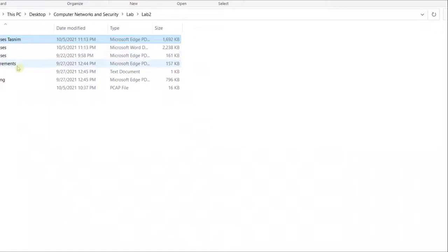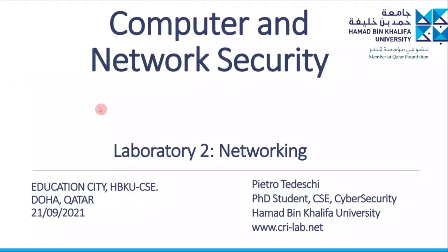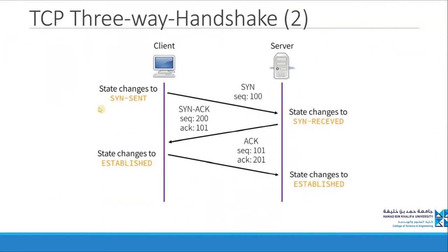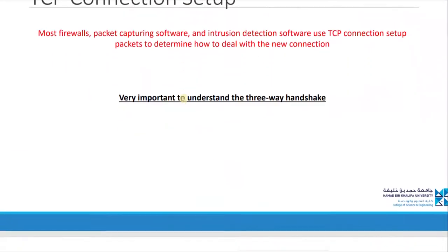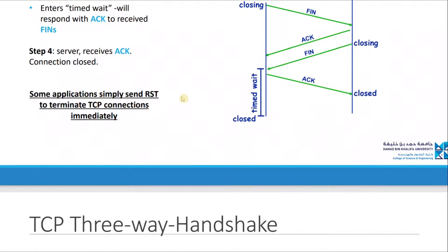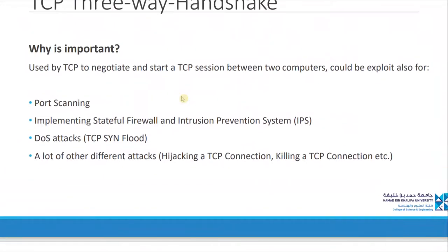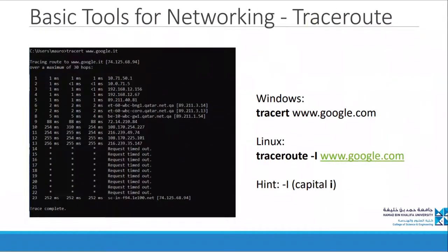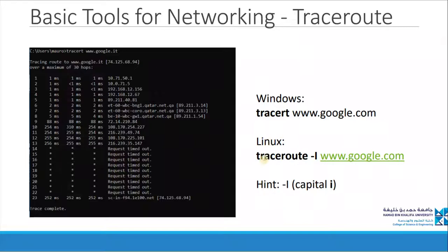So let's go to the lab 2 explanation. This lab talks about, first of all, the TCP three-way handshake — how is this communication established, and why the three-way handshake is important. Then it covers the tools we use for networking. One of the tools is traceroute. In Linux, we use traceroute -i, then we put cnn.com. In this way, we can find all the IP addresses between me and the domain.